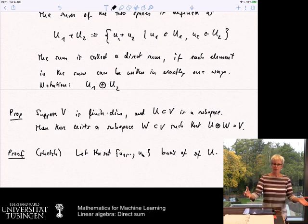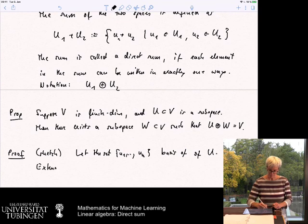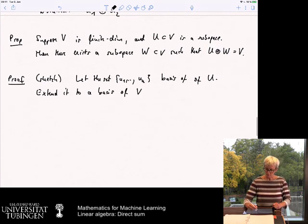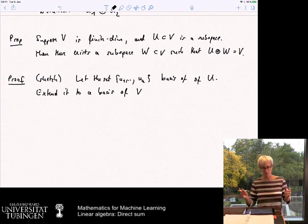And now, by the theorems that we have seen, or the propositions that we have seen before, we can take this basis and extend it to a basis of the complete space. So extend it to a basis of v, which means that we need to add certain vectors until we end up with a linearly independent set that spans the whole space.